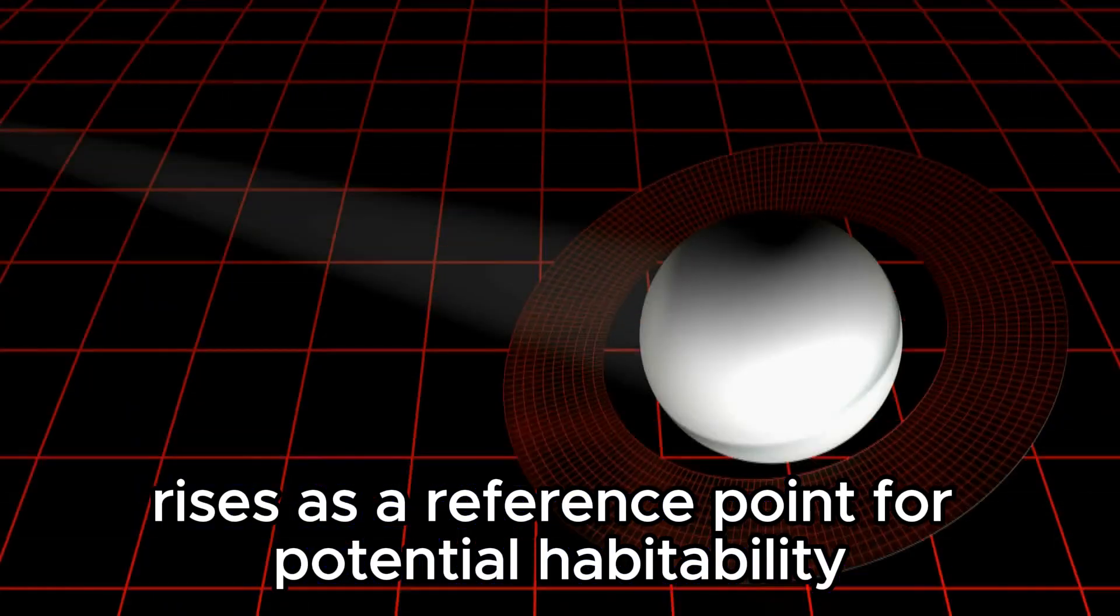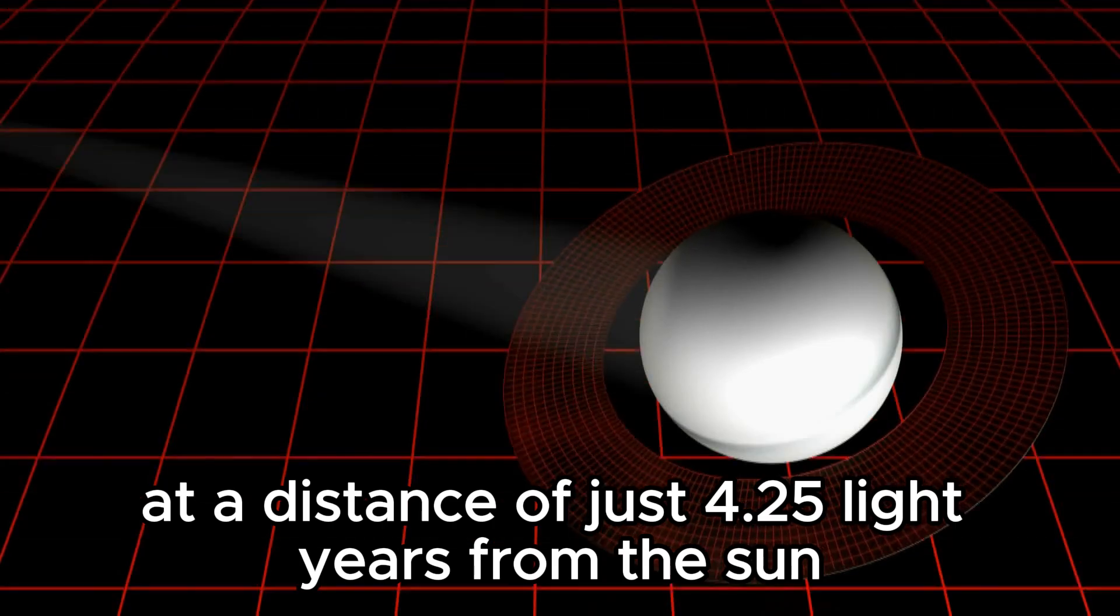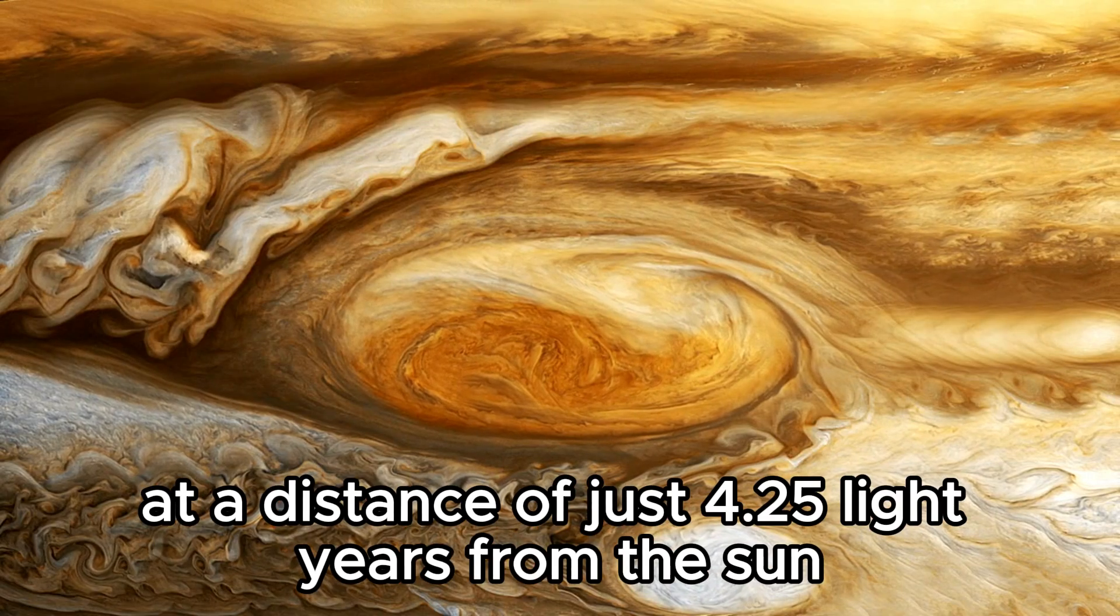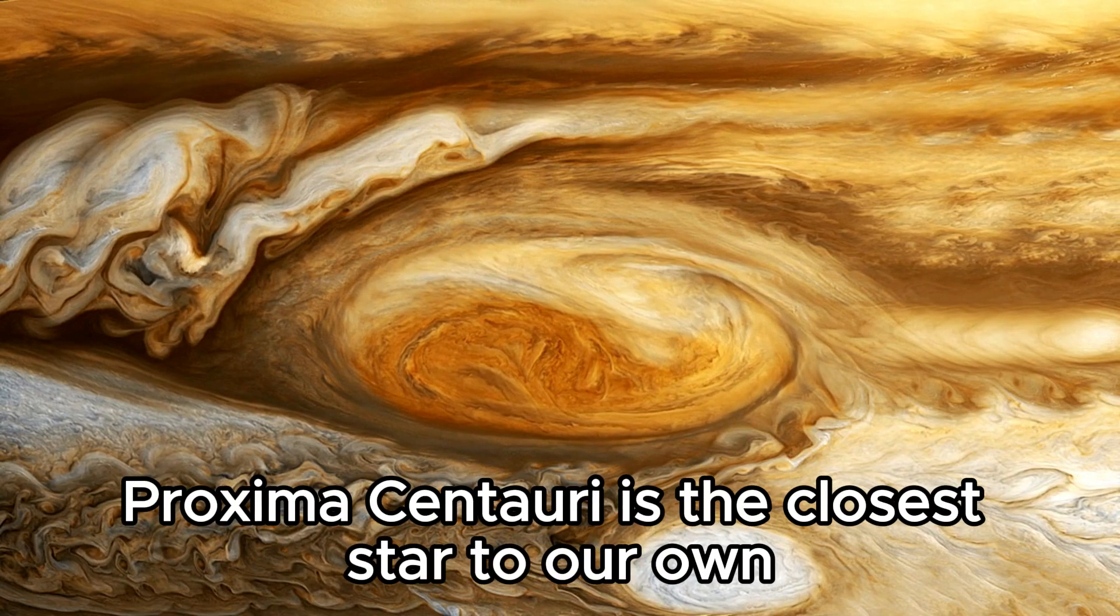Although smaller and cooler than our sun, the TRAPPIST-1 star emits light suitable for supporting life on its orbiting planets. Among the diverse stars in the cosmic community, Proxima Centauri rises as a reference point for potential habitability.